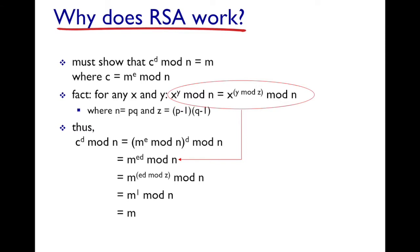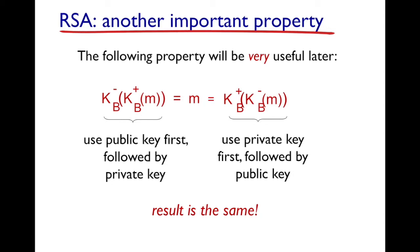There is another important property of RSA: if you encrypt with the public key first and then decrypt with the private key you get m back, and similarly if you use the private key first and then apply the public key you still get m. Both results are the same, making RSA symmetric in this sense, which will be very useful.